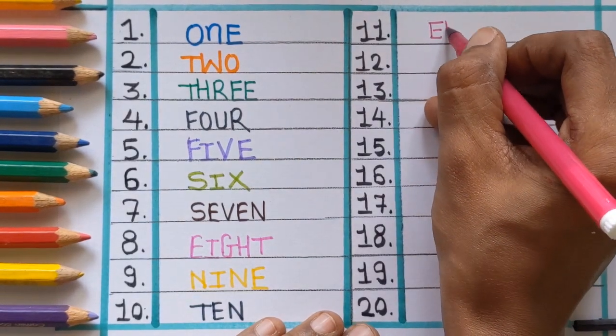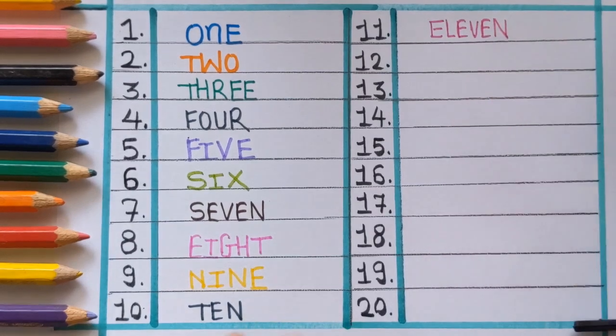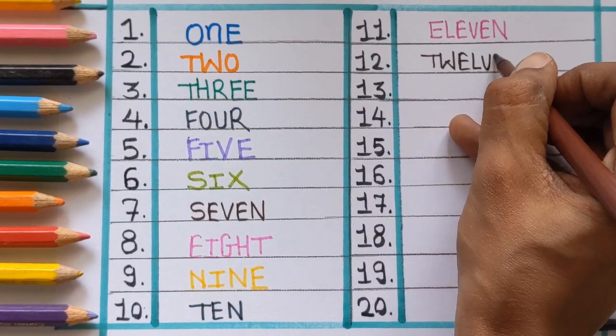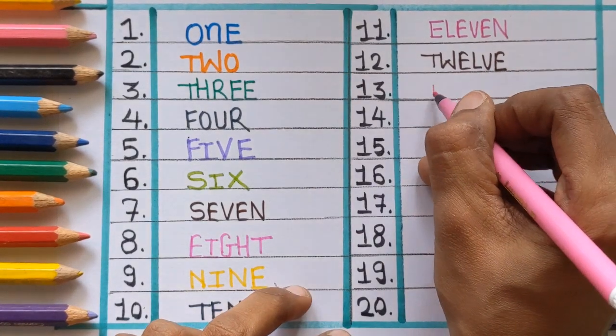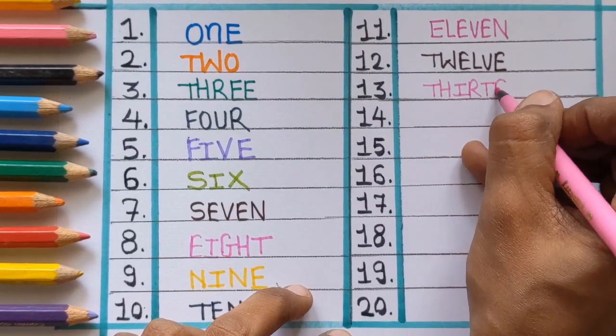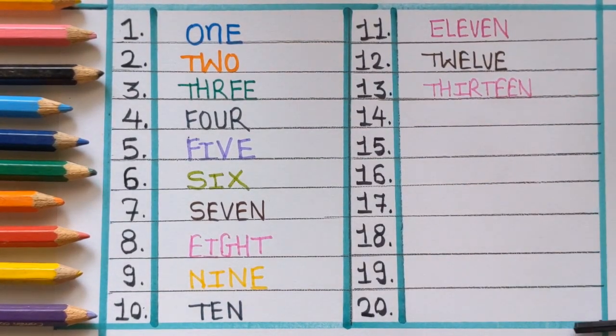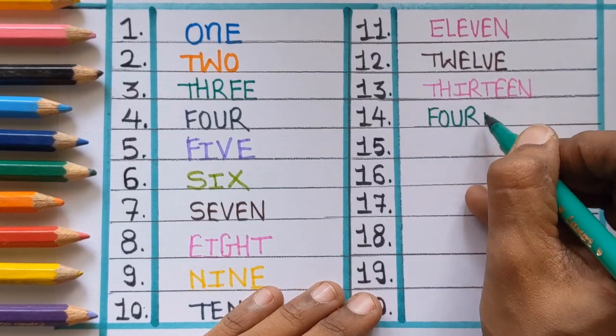Eleven, E-L-E-V-E-N, eleven. Twelve, T-W-E-L-V-E, twelve. Next number is thirteen, T-H-I-R-T-double E-N, thirteen.